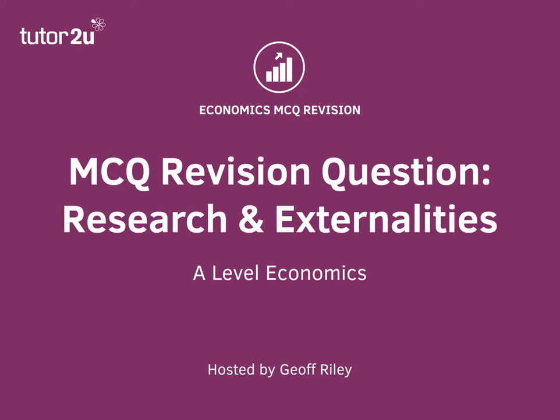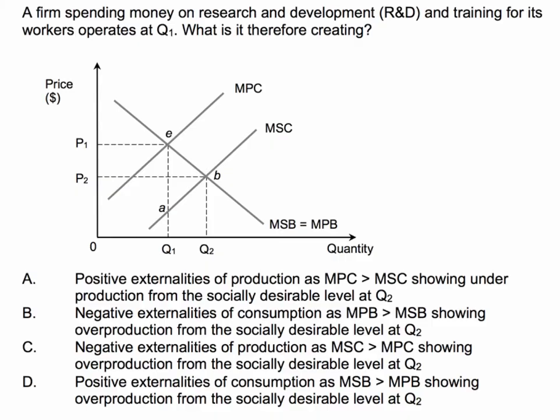If you've been covering externalities in your revision, here's a chance to test your understanding and see where you are ahead of an exam — a question on research and externalities. A firm spending money on research and development and training for its workers operates at output level OQ1. What therefore is it creating? Have a think, choose your answer, press the pause button and come back.